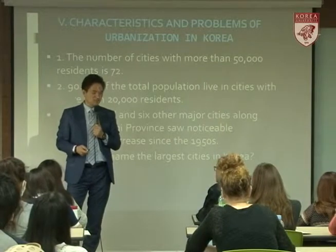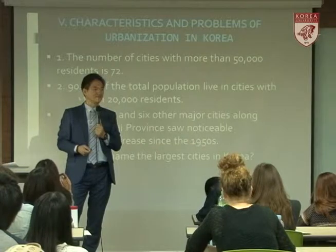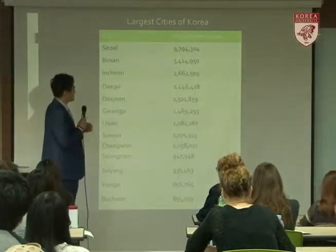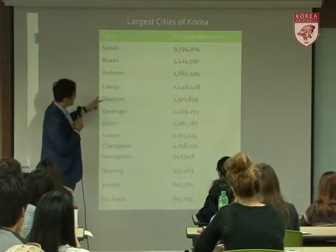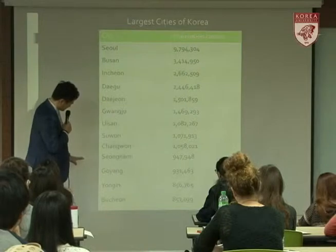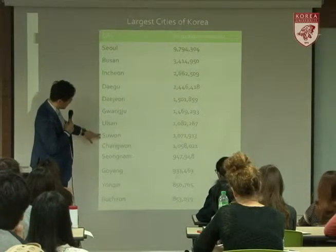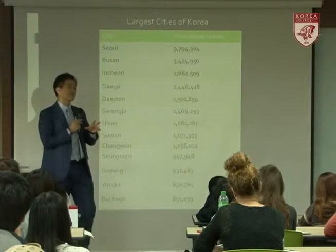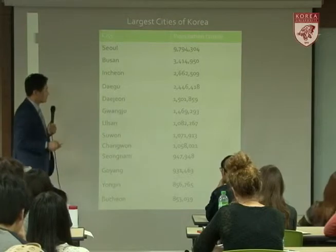The largest cities in Korea based on the 2010 national census: Seoul is number one, then Busan, Incheon, Daegu, Daejeon, Gwangju, Ulsan, and Suwon. Surrounding Seoul you already have Bucheon, Yongin, Goyang, Seongnam, Suwon, and Incheon. We have about six top cities near the vicinity of Seoul — so the concept of a megalopolis could be applied to the capital region.